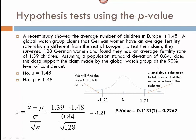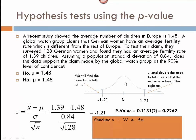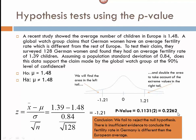At the 90% confidence level — which corresponds to a 10% significance level — our p-value of 0.2262 is definitely larger than 0.10. Therefore, we fail to reject the null hypothesis. There is insufficient evidence to conclude that the fertility rate in Germany is different from the European average. This concludes our examples for Module 12.3, where we do hypothesis tests when sigma is known, allowing us to use the z-value comfortably.